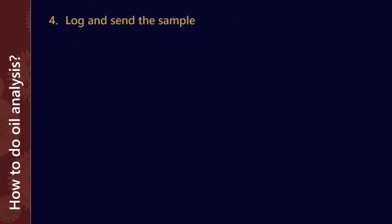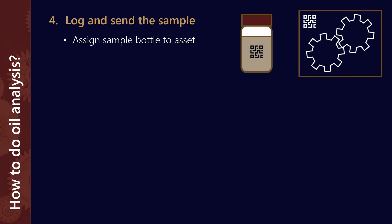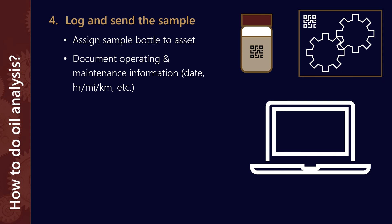The next thing we want to do is log and send the sample with your used oil analysis provider. Generally, all these programs will require you to assign the sample bottle to a specific asset, so the software will be able to know that the sample is linked to that specific asset. We then also want to document as much operating information as we can. If we can document the date the sample was taken, the number of hours on the oil, the number of hours that the equipment has done, whether there's been an oil change or a filter change — all this information is key to being able to get good insights out of the final results.